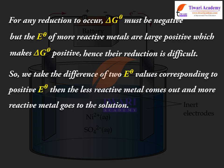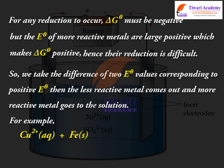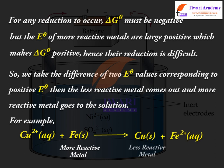So we take the difference of two Eθ values corresponding to a positive Eθ; then the less reactive metal comes out and the more reactive metal goes into the solution. For example: Cu²⁺(aq) + Fe(s) [more reactive metal] gives Cu(s) [less reactive metal] + Fe²⁺(aq).